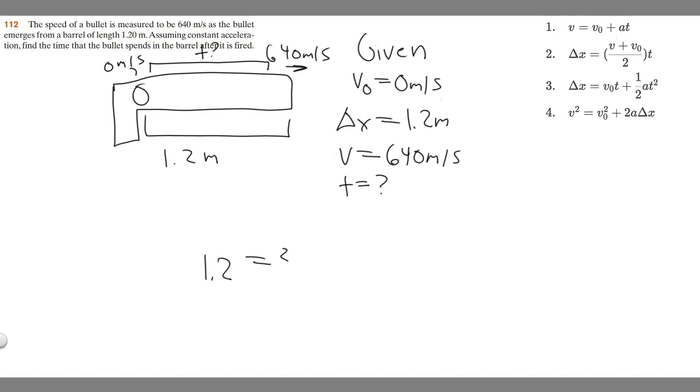So essentially, 1.2 is equal to 320t. And if we want to solve for t, get it by itself, divide both sides by 320. So t equals 1.2 divided by 320. So you're going to get 0.00375 and keep in mind what we're using in terms of time. It's going to be seconds.